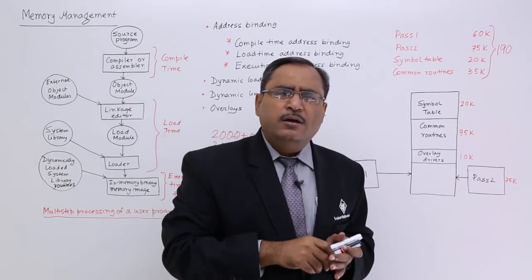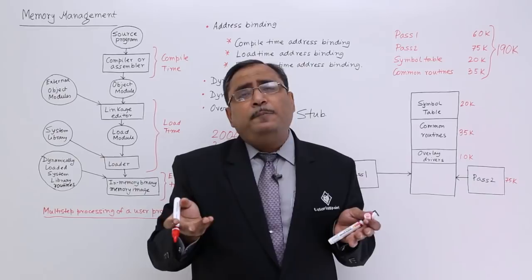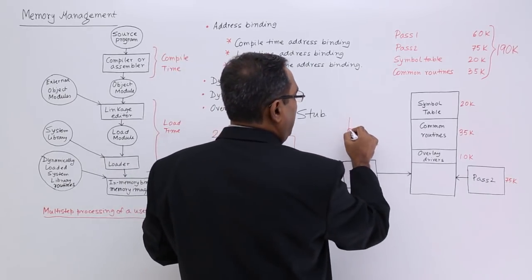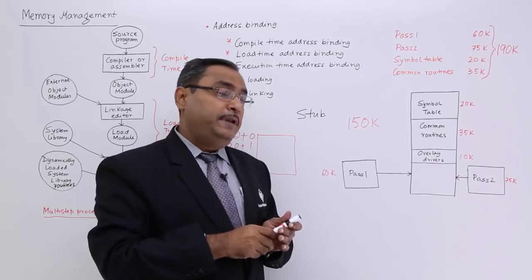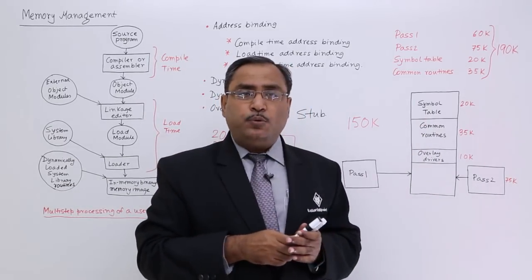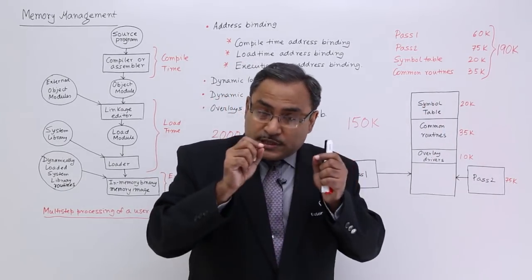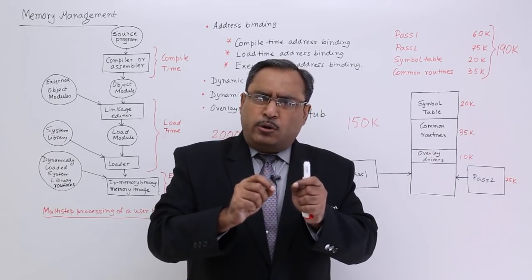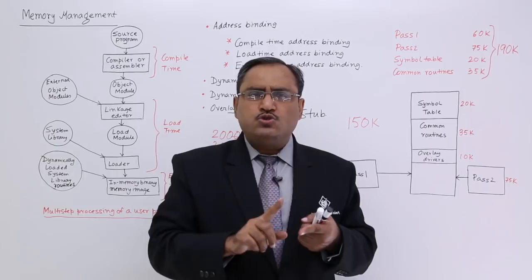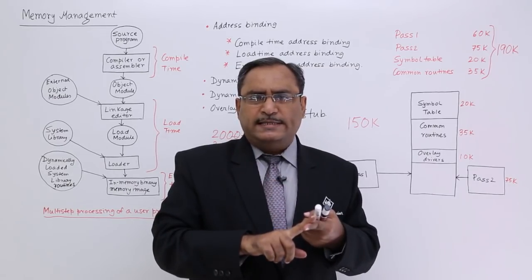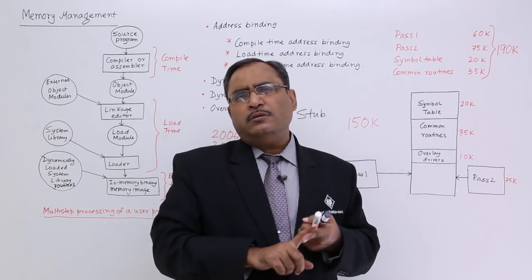But suppose we have only 150 KB of free memory space. Can I compile this program? Obviously not — due to lack of memory space I cannot load all these modules. But the question is: should I load all the modules at the same time? No — pass 1 and pass 2 are mutually exclusive. When pass 1 is executing, pass 2 is not executing. When pass 2 is executing, pass 1 should not exist in the memory because it is of no use.